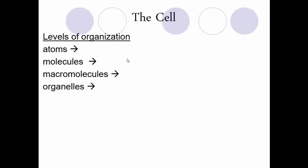Putting similar cells together gives you a tissue — a group of similar functioning cells. Different tissues together form organs, which are groups of tissues that work together to perform a function, such as the stomach. The stomach is an organ made of various tissues — muscle tissue, connective tissue — all working towards digestion. Organ systems are formed when organs work towards the same overall goal; the stomach, for example, is part of the digestive system and needs other organs to perform digestion.